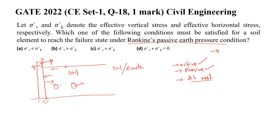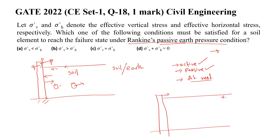We have to deal with the passive earth pressure condition, where the wall is moving towards the soil. Let us take any element in the soil. Vertical pressure is always in the downward direction due to gravity. As the wall is moving towards the soil, the pressure on the soil element will be in the horizontal direction.